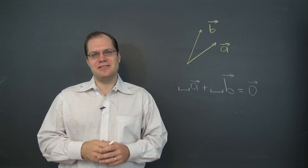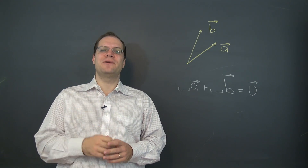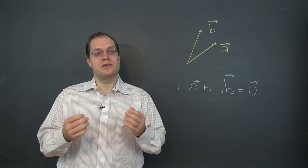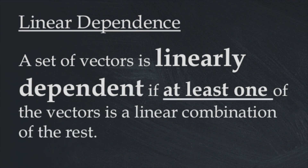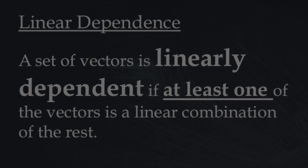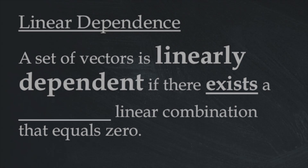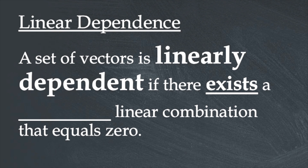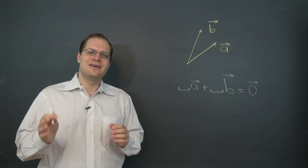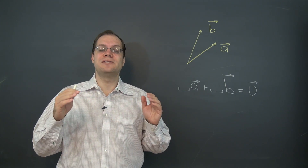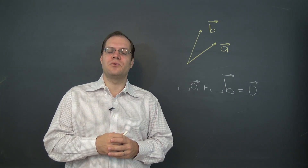Let's fix the second definition of linear dependence that we came up with in the last video. We now have two definitions of linear dependence. According to the first one, a set of vectors is linearly dependent if at least one of them is a linear combination of the rest. That definition is alright. The second definition is, a set of vectors is linearly dependent if there exists a linear combination that equals zero. The second definition is not quite alright — it's missing a very important word. So let's figure out what that word is.